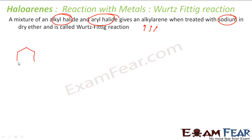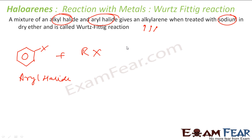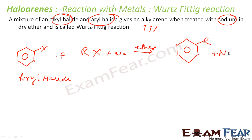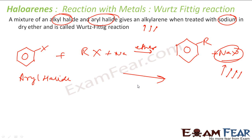Looking at the reaction: we take an aryl halide, an alkyl halide, and sodium metal in ether as solvent. The product is the aryl group bonded to the alkyl group (Ar-R), plus NaX as byproduct. The reason we carry out the reaction in ether is because of the equilibrium nature of the reaction — NaX is not soluble in ether and precipitates out, driving the reaction in the forward direction.